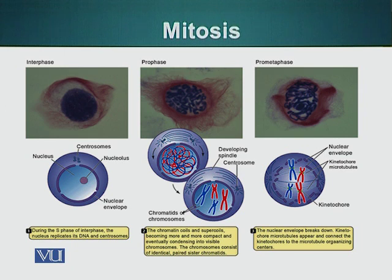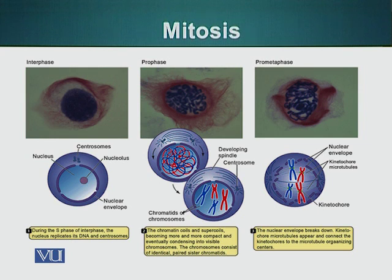The first stage of mitosis is prophase. In this stage the chromatin starts to coil and becomes condensed — remember this chromatin has already divided during the S phase. The centrosomes, which have already divided, move to opposite ends of the cell, forming the spindle. The nuclear envelope is still intact. The chromosomes have already divided; from one chromosome we now have two chromatids still held together at the centromere region by a special molecule acting as glue, which are still holding these two chromatids together.